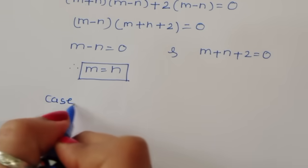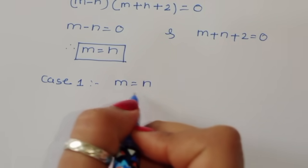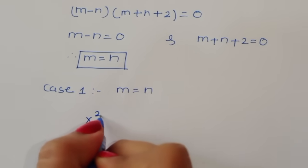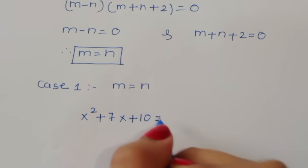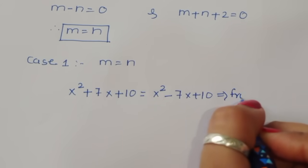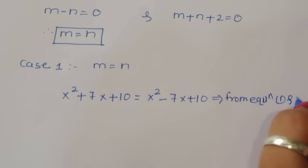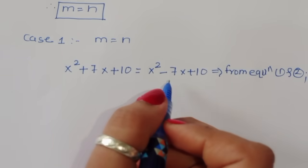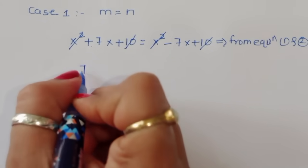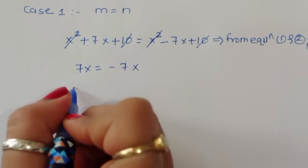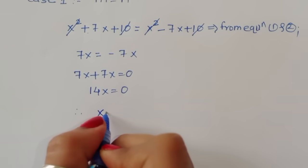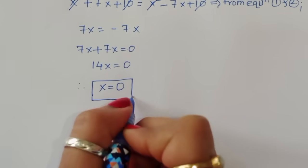Case 1: m = n. Substituting back, x²+7x+10 = x²-7x+10. The x² and +10 terms cancel, leaving 7x = -7x, so 14x = 0, therefore x = 0. We got the first value of x.